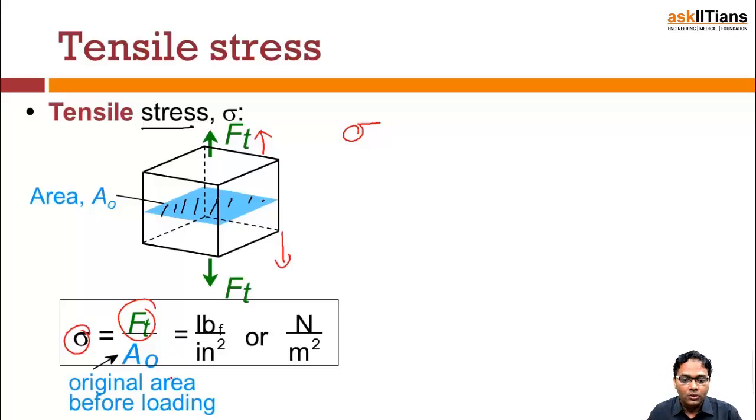Which is going to be equal to Ft, which is the force that has been applied on any particular cross-section. Mind you, here we are not considering both the forces because both the forces are not acting at the same area of cross-section. They are acting at different areas of cross-section, so we have to take the stress at a particular cross-sectional area. So it becomes Ft divided by A₀.